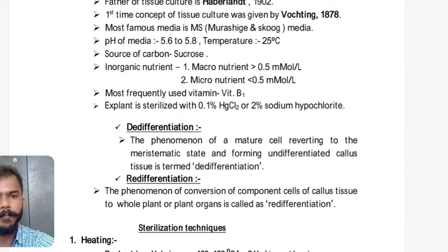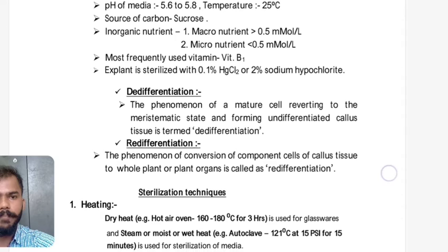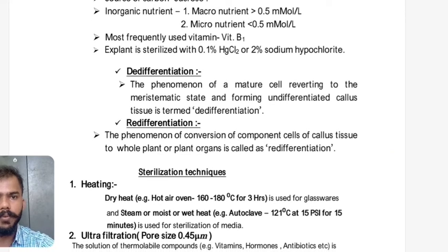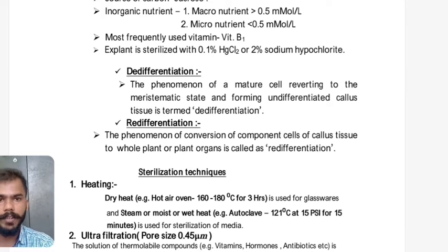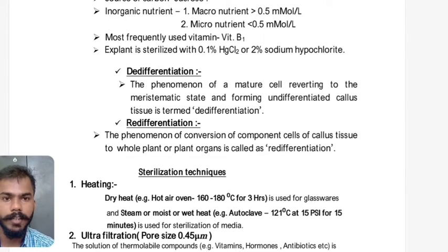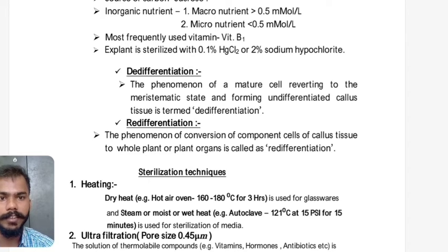Two important terms in tissue culture: De-differentiation is the phenomenon of a mature cell reverting to the meristematic state and forming undifferentiated callus tissue. Re-differentiation is the phenomenon of conversion of a component cell of callus tissue back into a whole plant or plant organ.